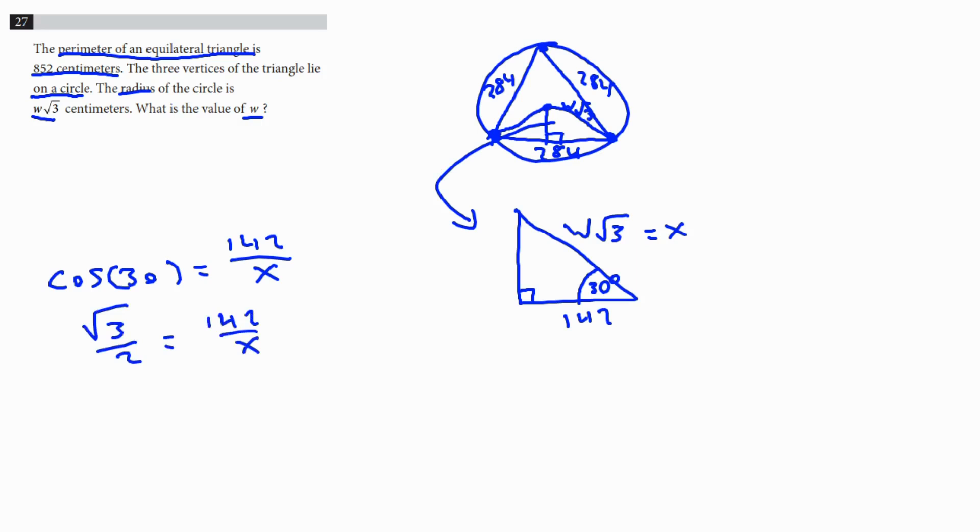So then if we solve for X, let's multiply it to the other side. We'll get square root of three over two X equals 142. Now let's just divide it out to the other side. So then X is going to equal 142 times two over root three, which is just going to equal, that'll be 142 times two. It's going to be 284 over root three.